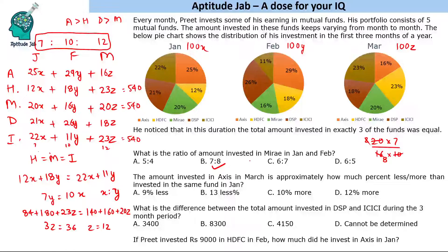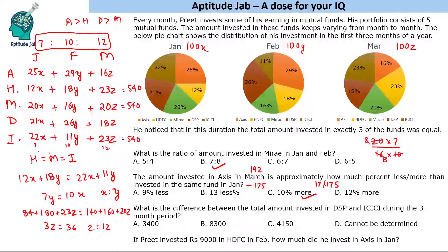The amount invested in Axis in March is approximately how much percent more or less than in January? Axis in January = 25 × 7 = 175. Axis in March = 16 × 12 = 192. It is more by 17. So 17 out of 175 is approximately 10% more. Since other options are far apart, the answer is approximately 10%.